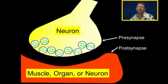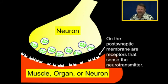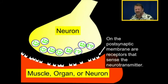So you'll hear about presynaptic membrane, the neurotransmitter being released from the presynaptic membrane, or you might hear about receptors on the postsynaptic membrane. So on the postsynaptic membrane are receptors that sense the neurotransmitter.